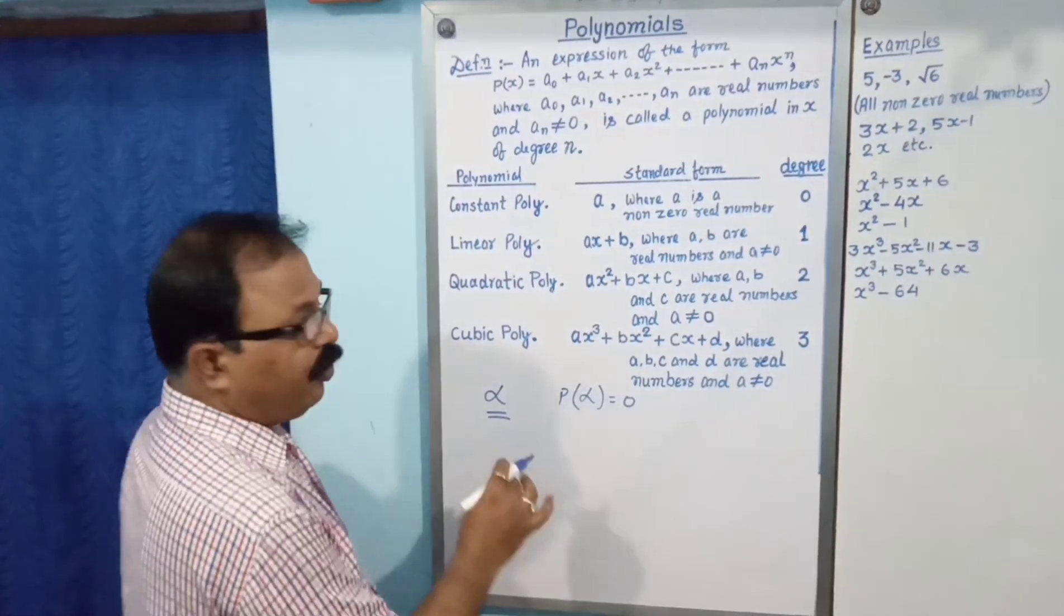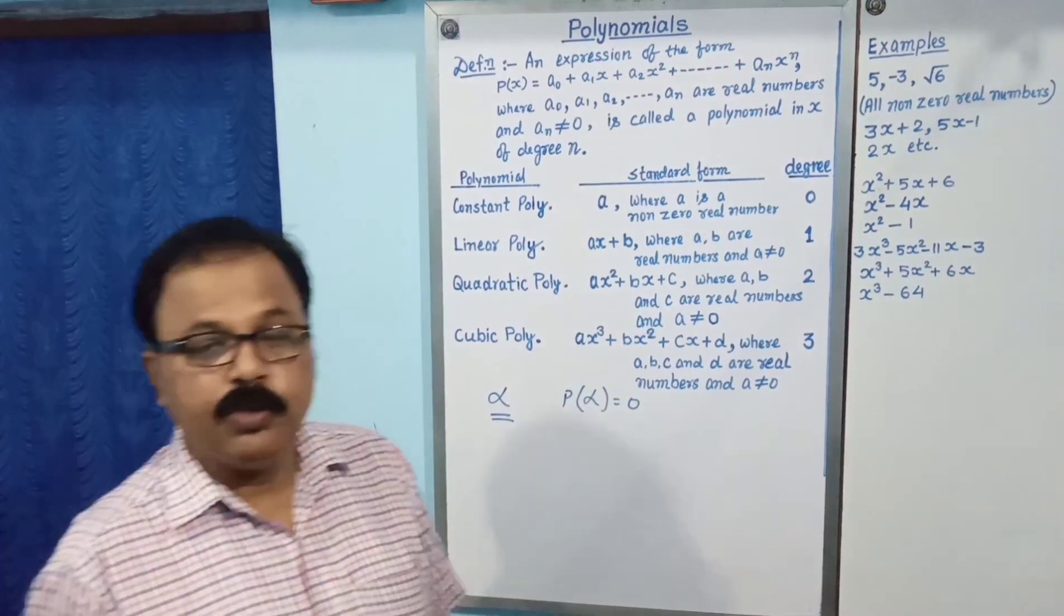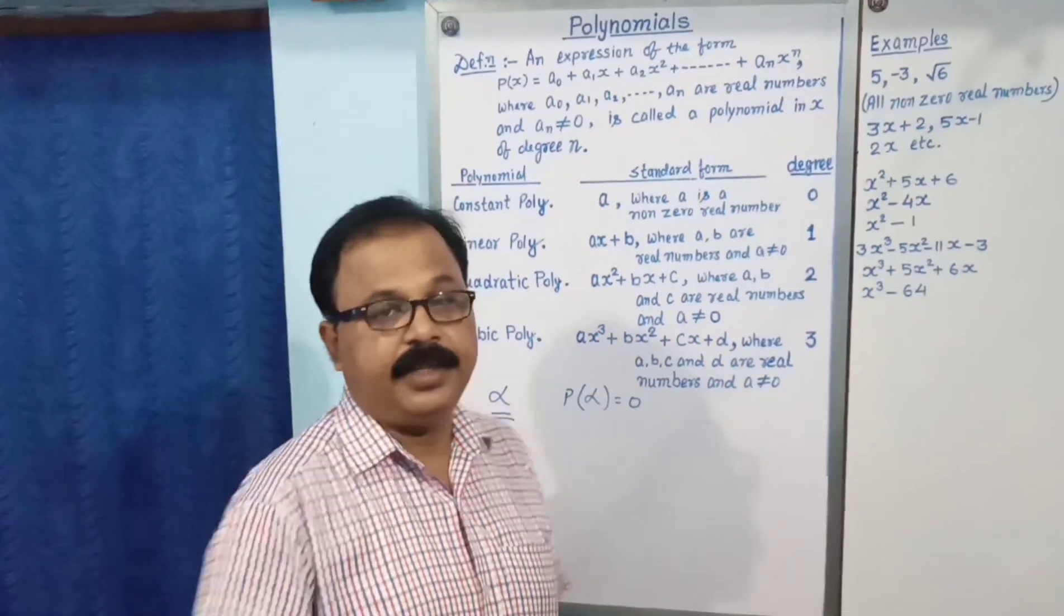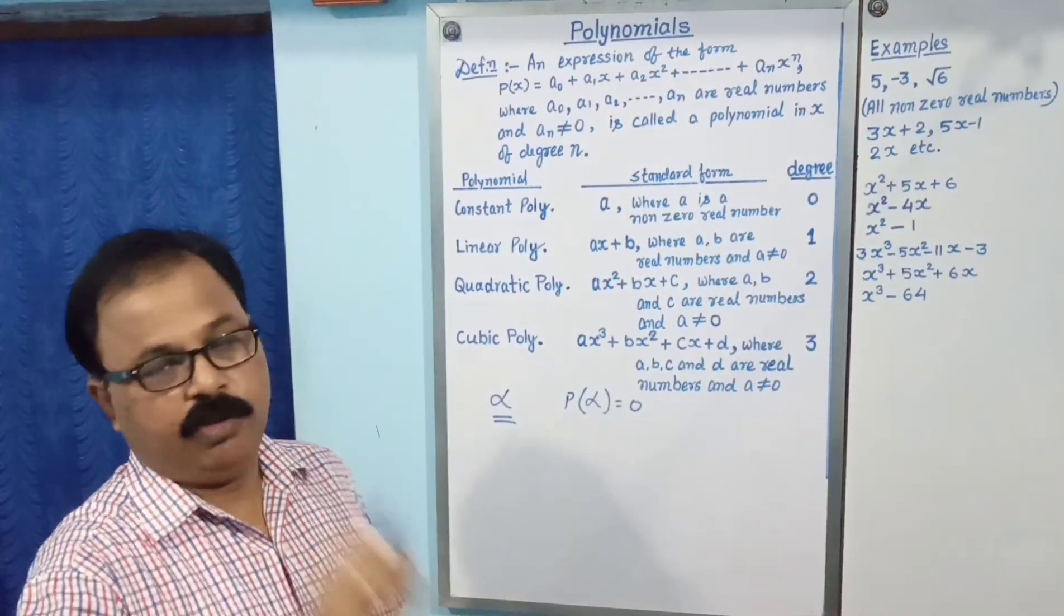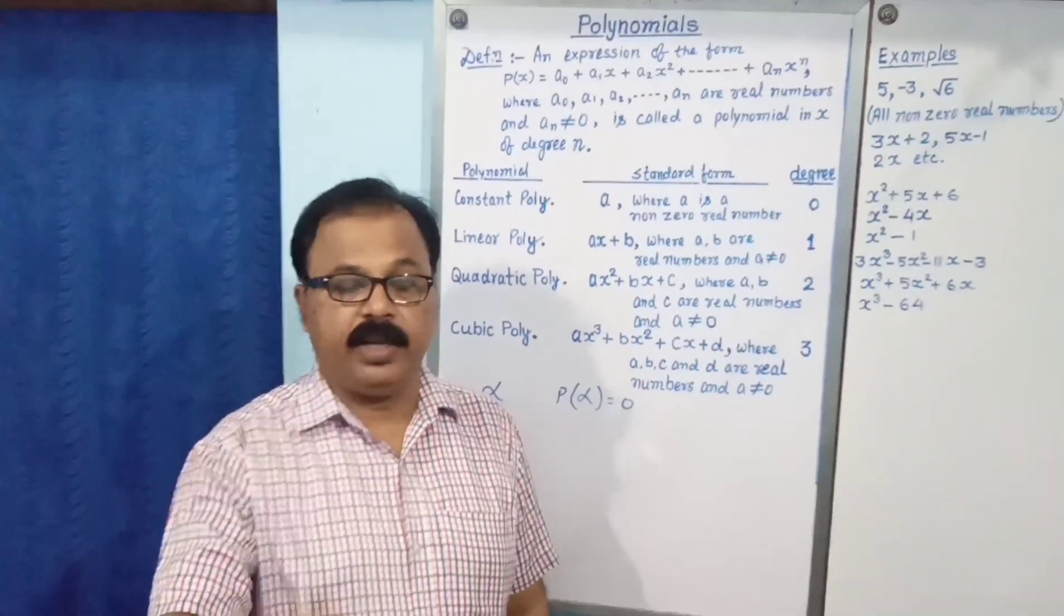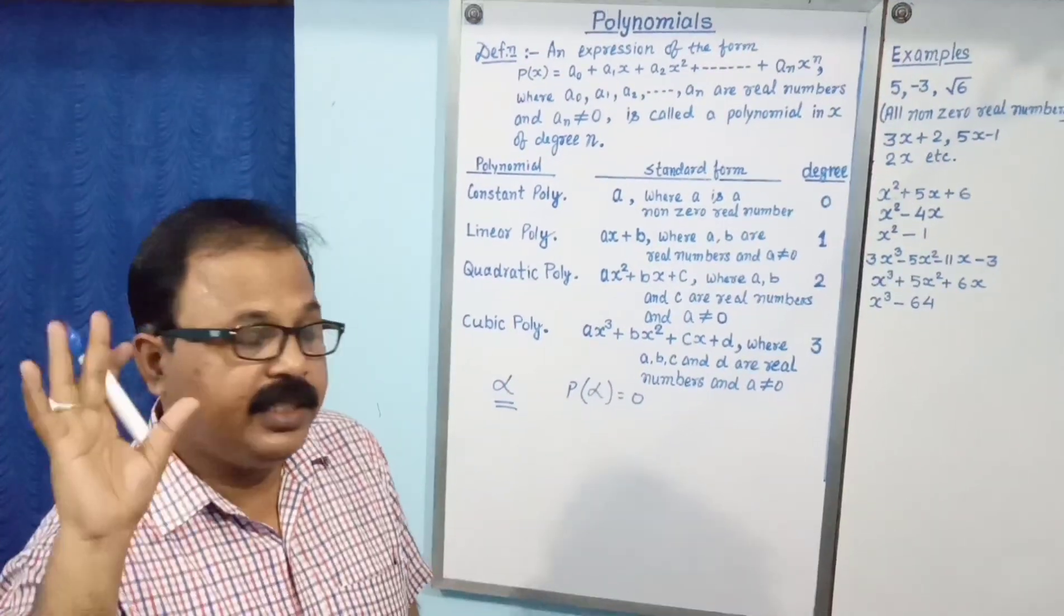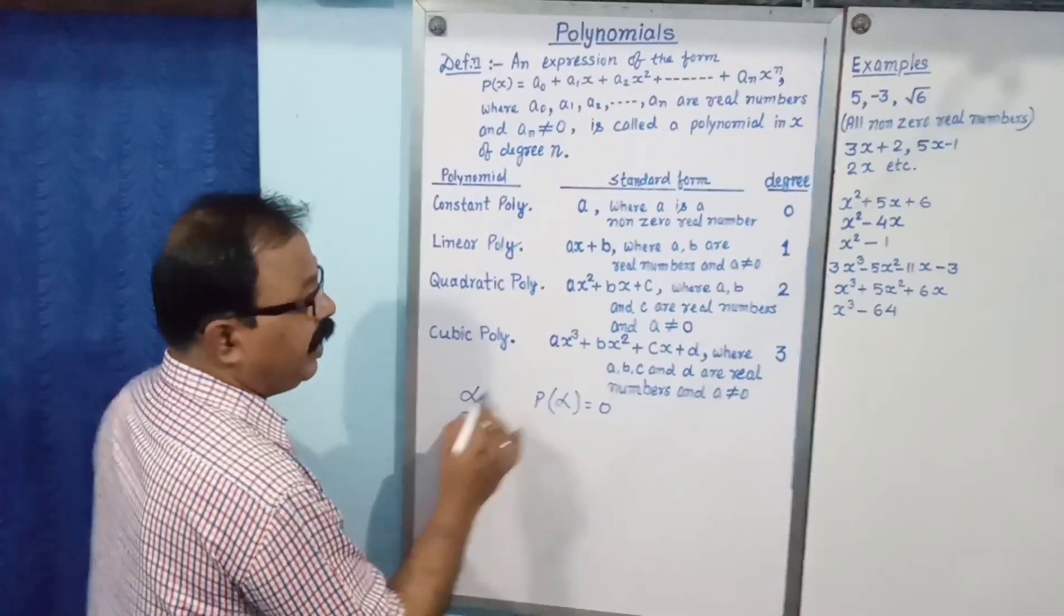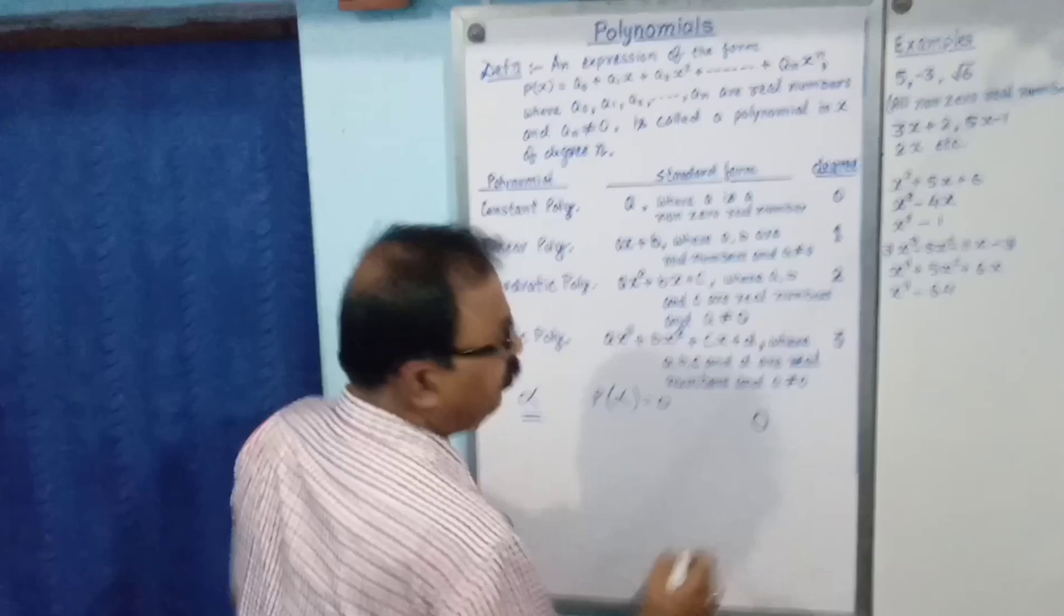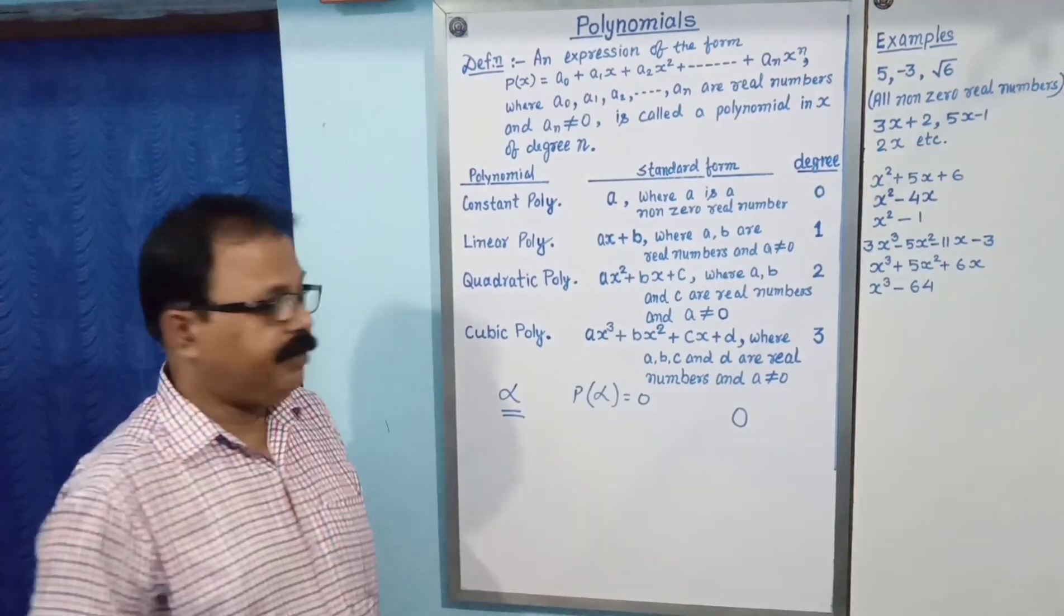But, before zeros of a polynomial, you have to understand zero polynomial. What is zero polynomial? Then 0 is called zero polynomial, whose degree is not defined. This is 0. Why the degree is not defined?